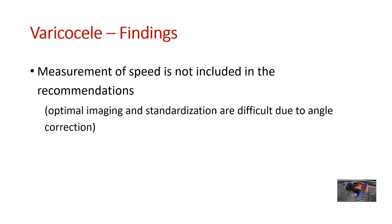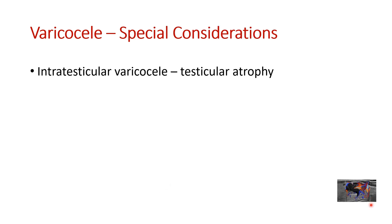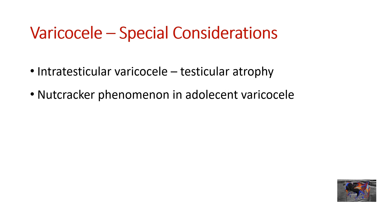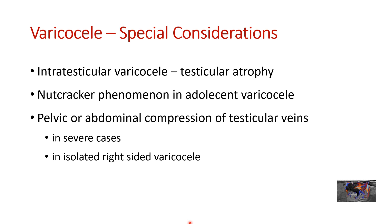Measurement of speed is not included in the recommendations because optimal imaging and standardization are difficult to maintain. For varicocele imaging there are some special considerations. Intratesticular varicocele is a rare but severe form of the disease which commonly causes atrophy of the testis. In adolescent varicocele, nutcracker phenomenon may be the cause and should be investigated. In severe varicocele or isolated right-sided varicocele, a pelvic or abdominal mass compressing the testicular veins should be checked.